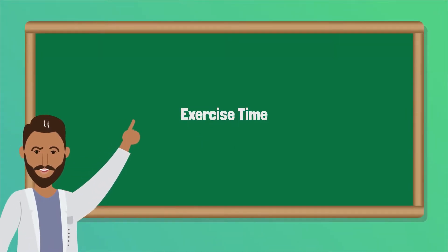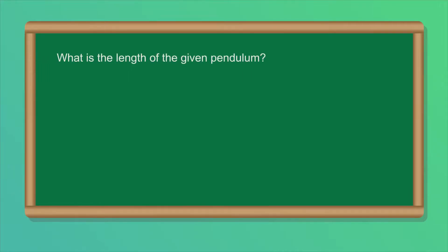Now, let's do an exercise. What is the length of the given pendulum given that its time period is 3.14 seconds? G is equal to 10 meters per second squared.